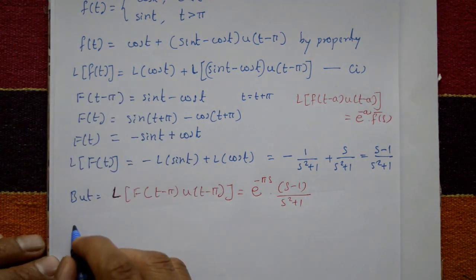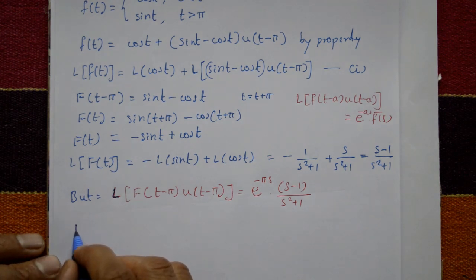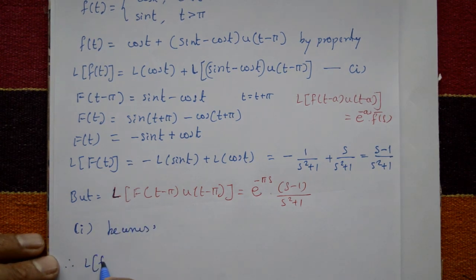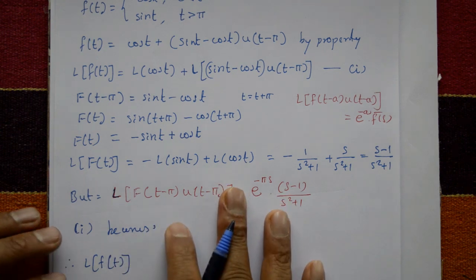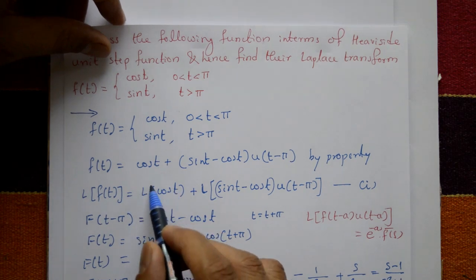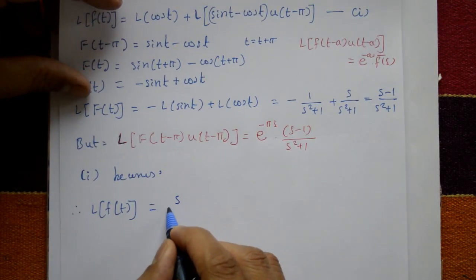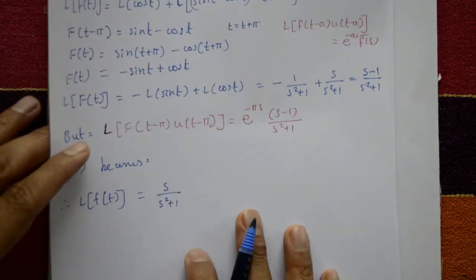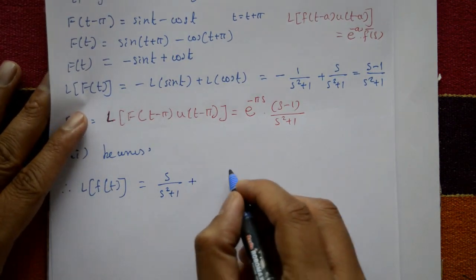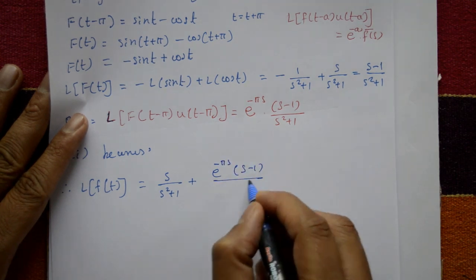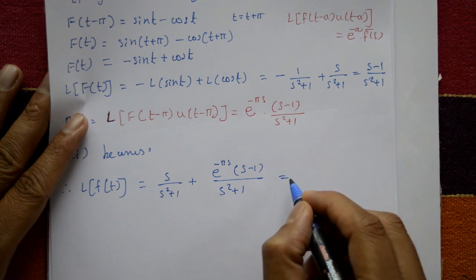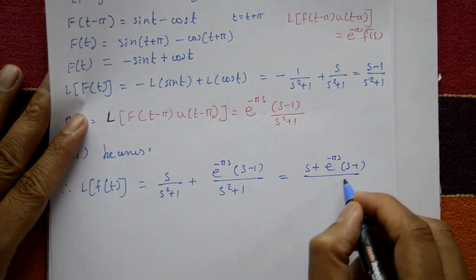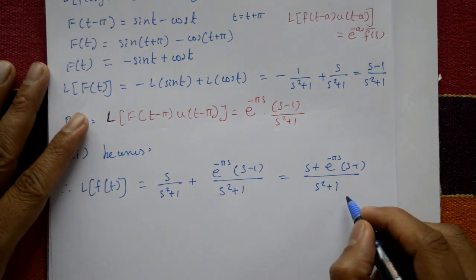Substituting back into equation one, the required Laplace transform is: L{f(t)} = s/(s² + 1) + e^(−πs) · (s − 1)/(s² + 1). This is the final required solution.